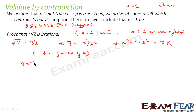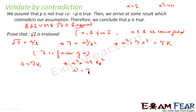So we can write a = 7k₁ for some constant k₁. Now let us square this: a² = 49k₁². We also have the equation a² = 7b².